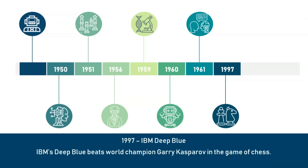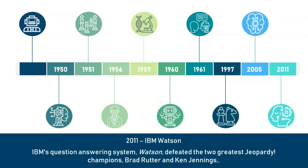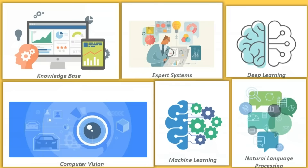In 2005, a robotic car named Stanley, built by Stanford's racing team, won the DARPA Grand Challenge. In 2011, IBM's question answering system Watson defeated the two greatest Jeopardy champions, Brad Rutter and Ken Jennings. This is how AI evolved — it started off as a hypothetical situation and is now the most important technology in today's world. Everything around us is run through AI, deep learning, or machine learning. Since the emergence of AI in the 1950s, we've seen exponential growth. AI covers domains such as machine learning, deep learning, neural networks, natural language processing, knowledge bases, expert systems, computer vision, and image processing.